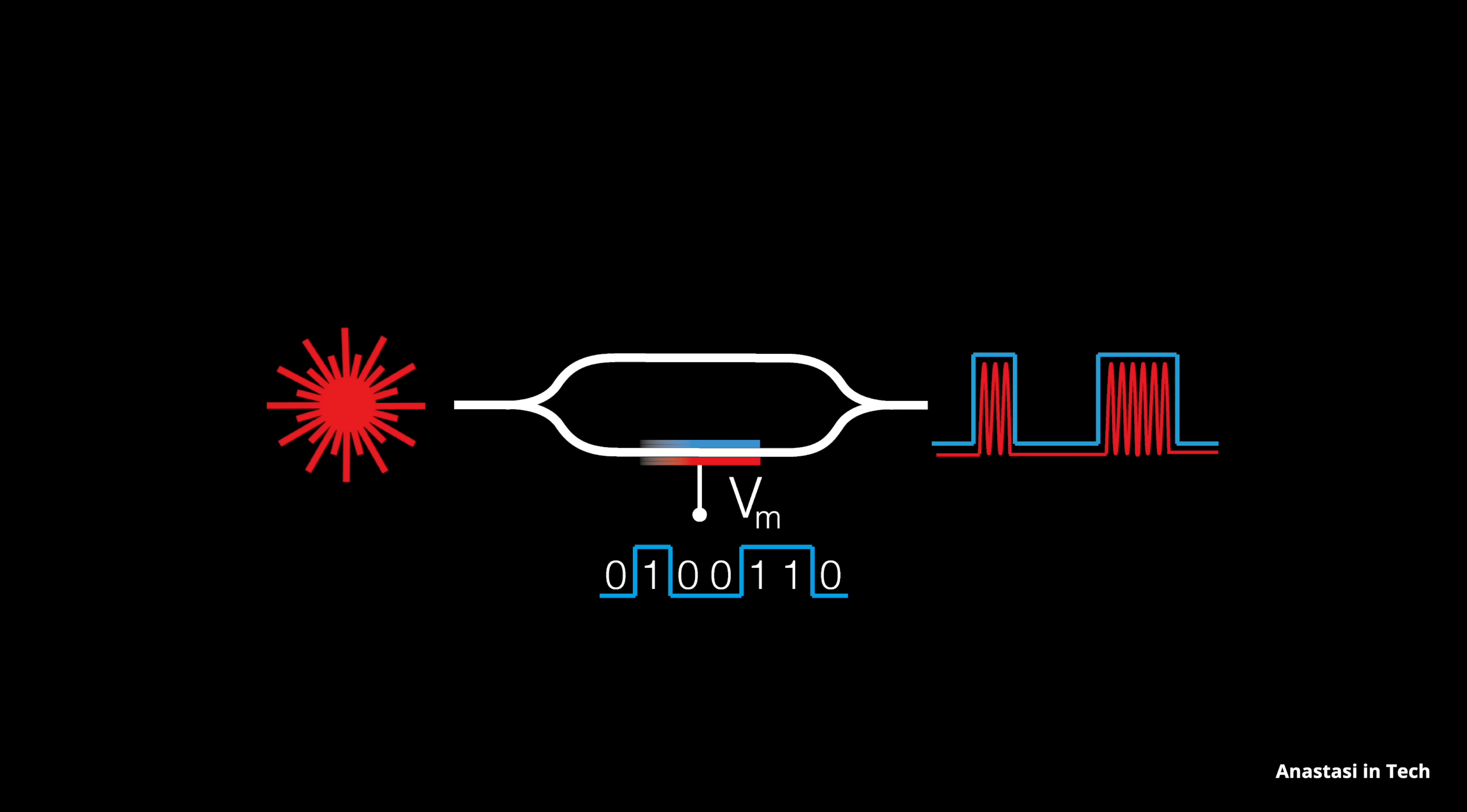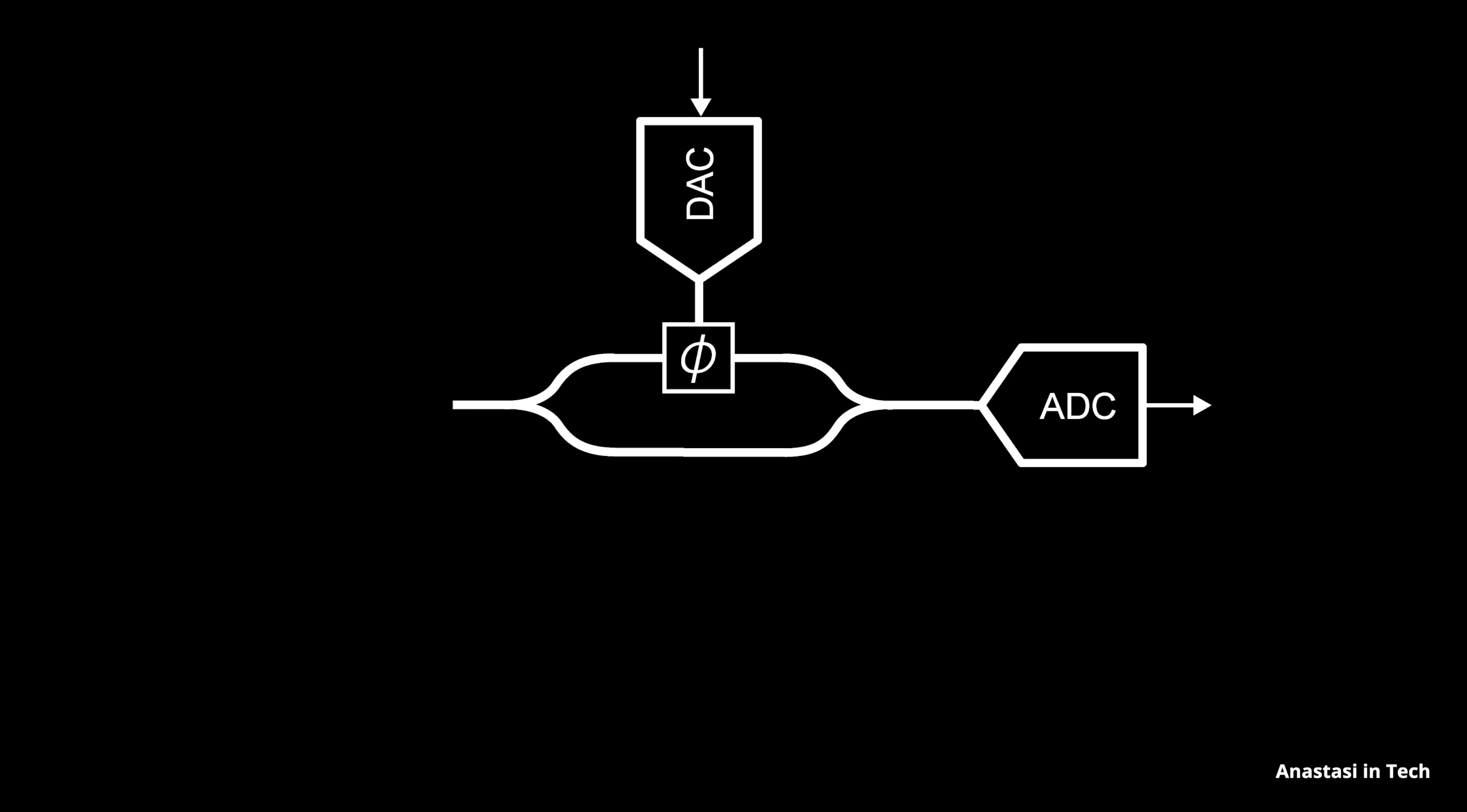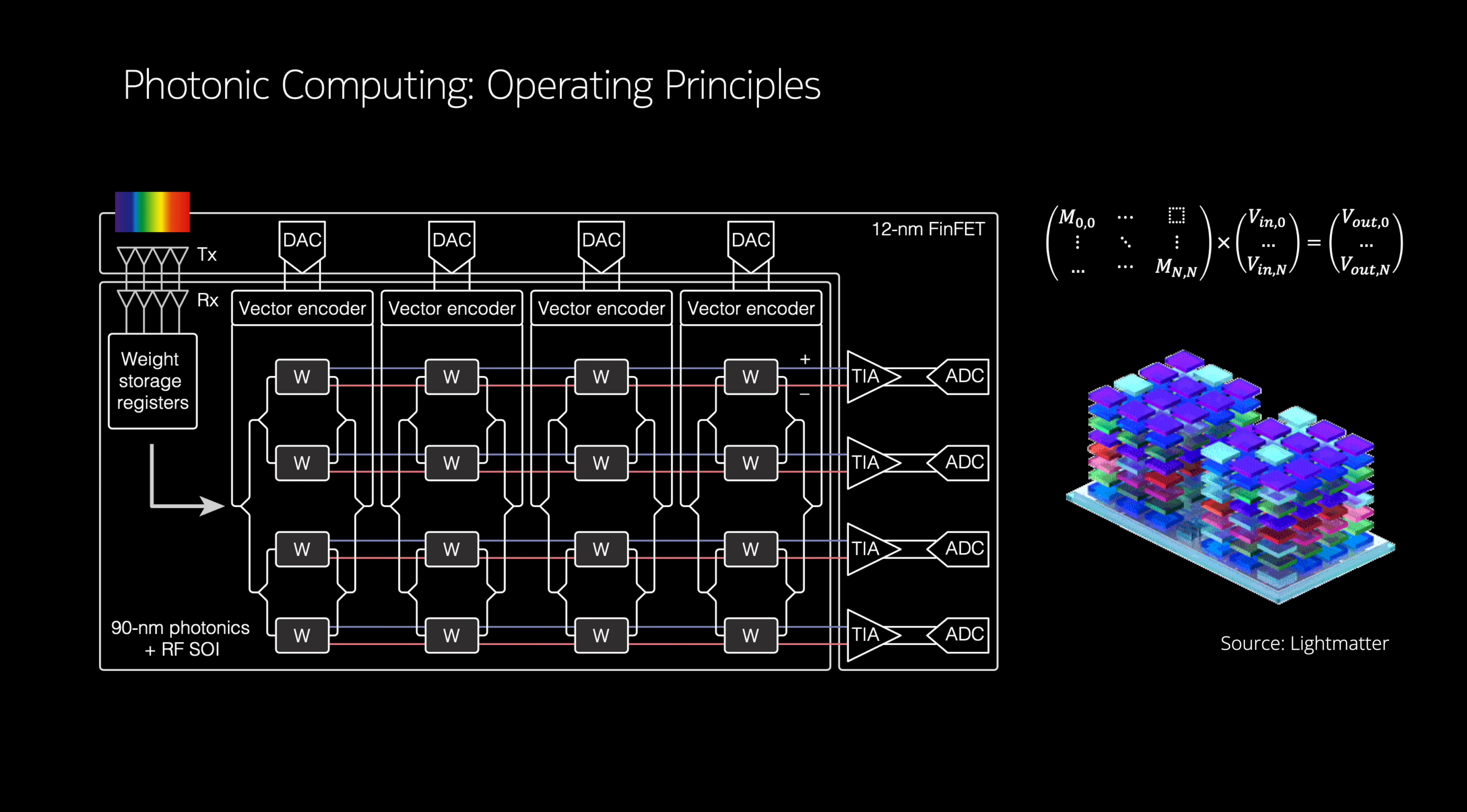We've already seen how applying an electrical signal to one path lets us encode digital data into light. But if we go one step further, and instead of digital pulses, we apply analog voltages, something fascinating happens. The amount of phase shift in this case changes smoothly depending on this voltage. And as a result, the intensity of light at the output becomes directly proportional to the product of two values: input light and applied voltage. In other words, this device performs analog multiplication,